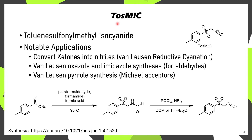TOSMIC is the shorthand name for a reagent known as toluene sulfonylmethyl isocyanide. Some notable applications include converting ketones into the corresponding nitriles via a reaction known as the van Leusen reductive cyanation. There are additional types of van Leusen reactions, such as for the synthesis of oxazoles, imidazoles, pyrroles, and even some others not discussed in this video.